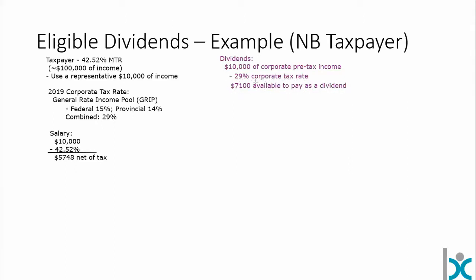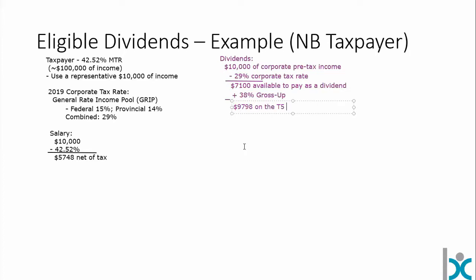The other $2,900 just went away to taxes. On that $7,100, you're going to have a gross-up of 38%. The gross-up is probably one of the more confusing mechanisms in the Canadian income tax system. The important thing to recognize is the corporation is actually writing a check for $7,100 — that's the amount this taxpayer will receive. The gross-up only shows up on the T5. So this taxpayer will have, completely artificially on their T5, $9,798 show up.